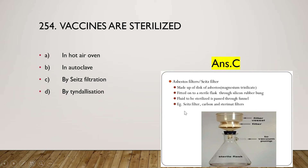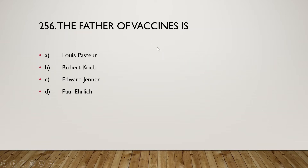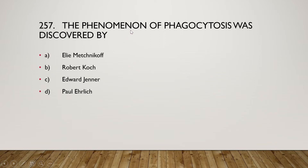The next question: the vaccine for hydrophobia was discovered by Louis Pasteur, Robert Koch, Edward Jenner, or Paul Ehrlich? The right answer given is option C, Edward Jenner. Edward Jenner is known as the father of vaccines and pioneered the concept of vaccination, including creating the smallpox vaccine — the world's first vaccine. The terms vaccine and vaccination are derived from Variolae vaccinae, meaning cowpox, a term devised by Jenner.